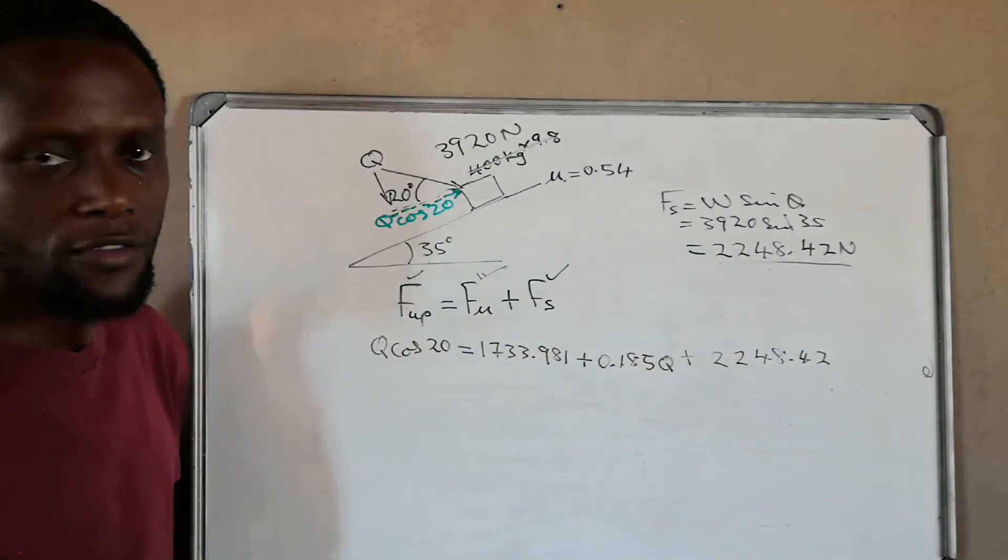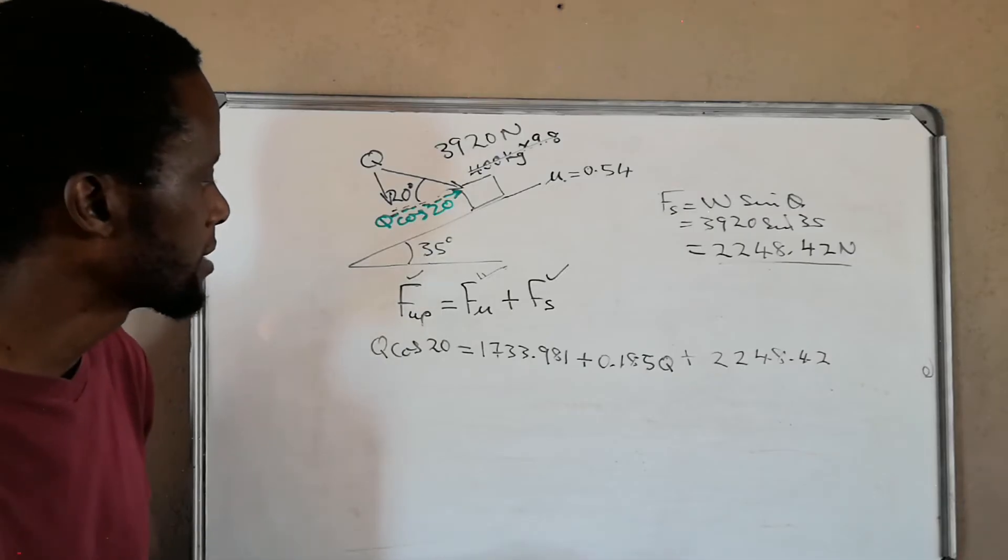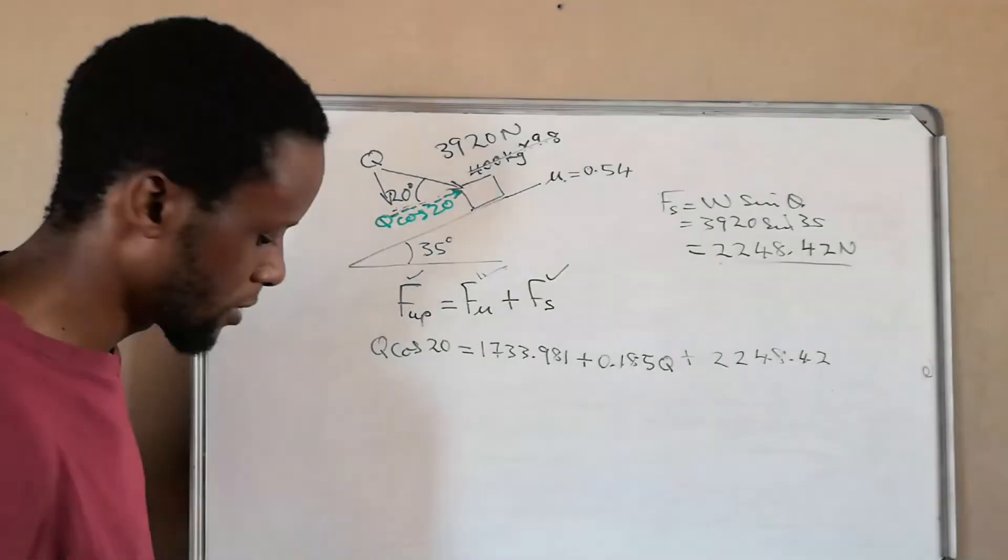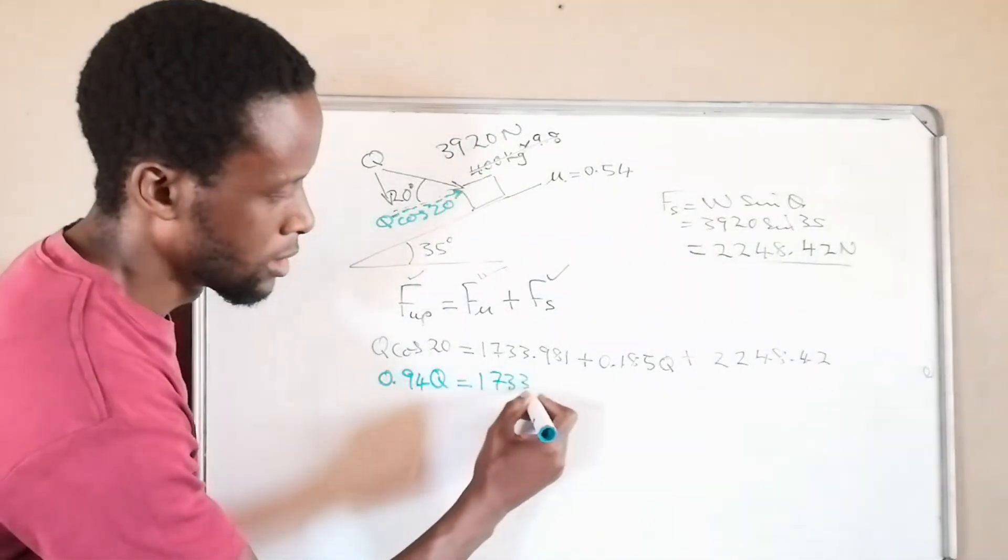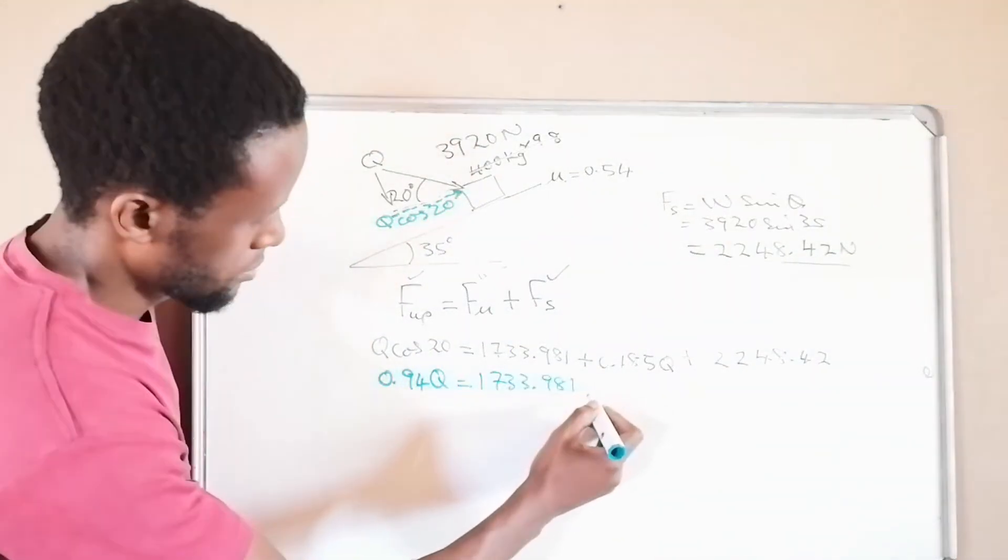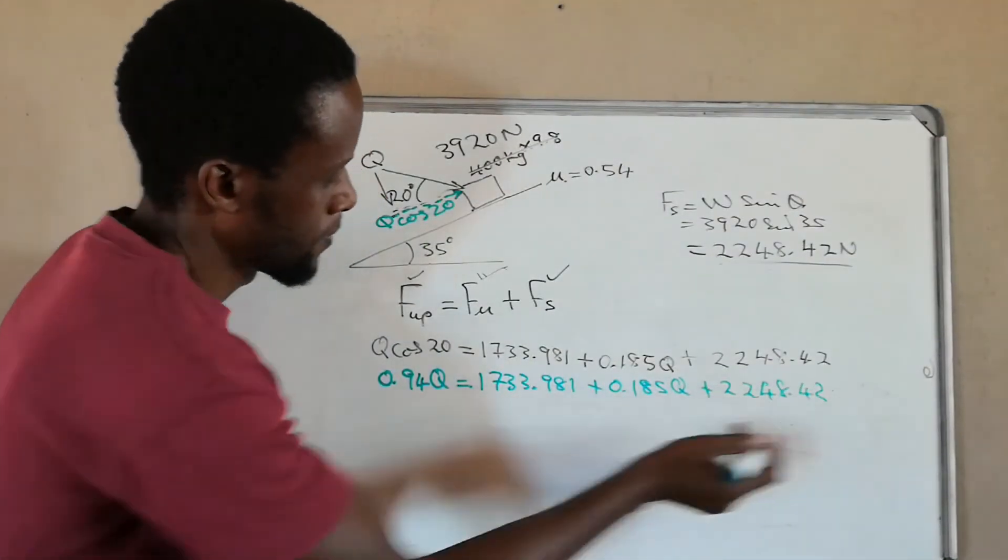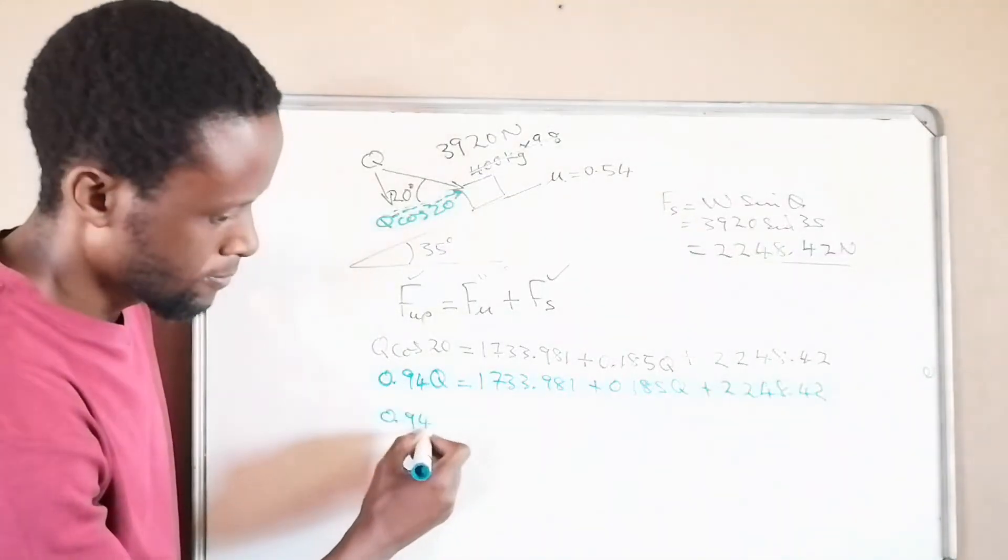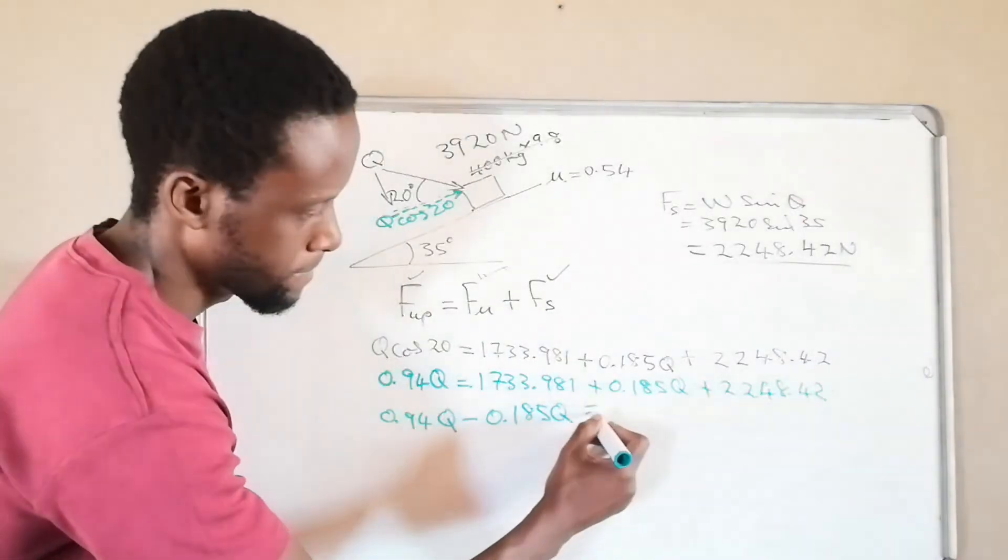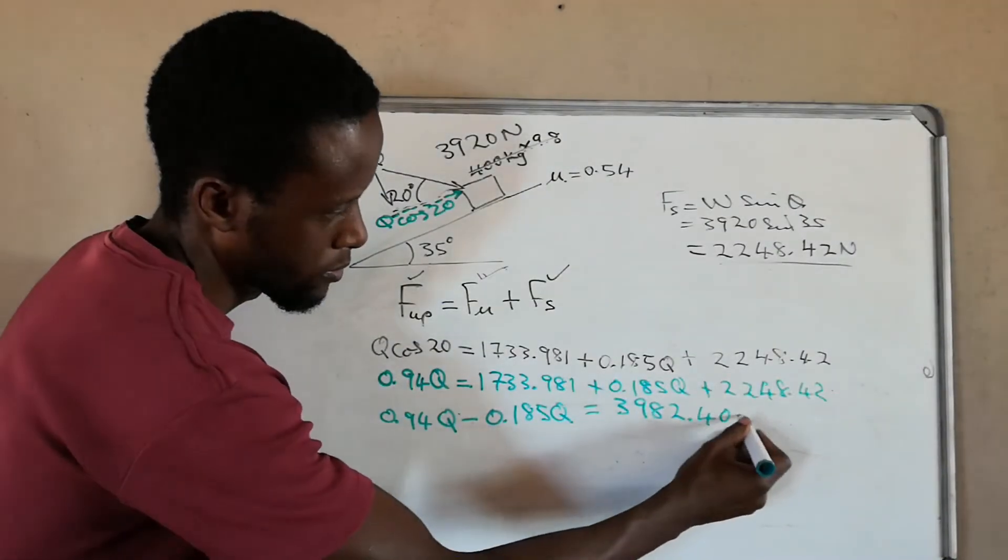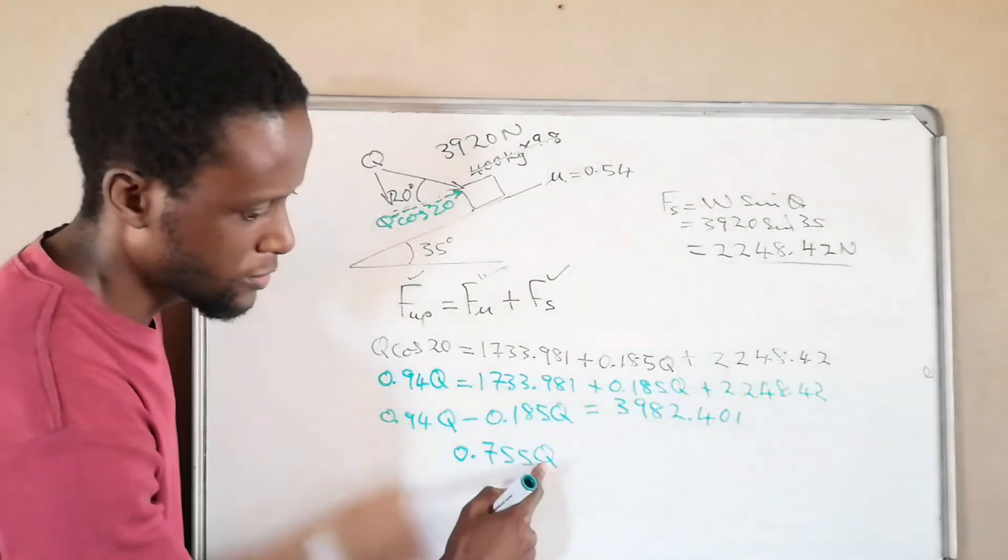Then from this point it's just a matter of now calculating cos 20, you calculate. So keep in mind we are solving for this.